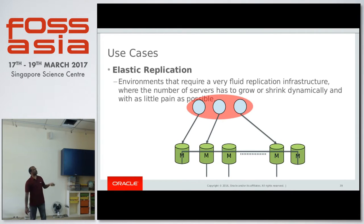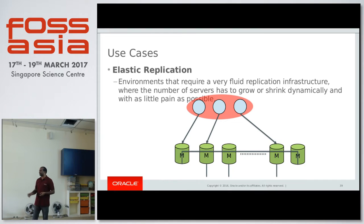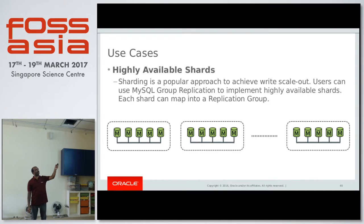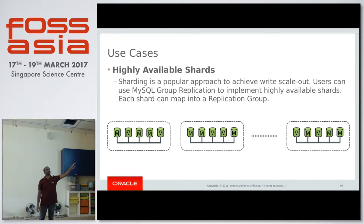Use cases include elastic replication: when your application needs nodes to be added or removed — for example to increase or decrease load — you can easily do it just by joining the group. You can also have highly available shards, where each group is one shard and you can have multiple shards, with each shard being a group replication group.